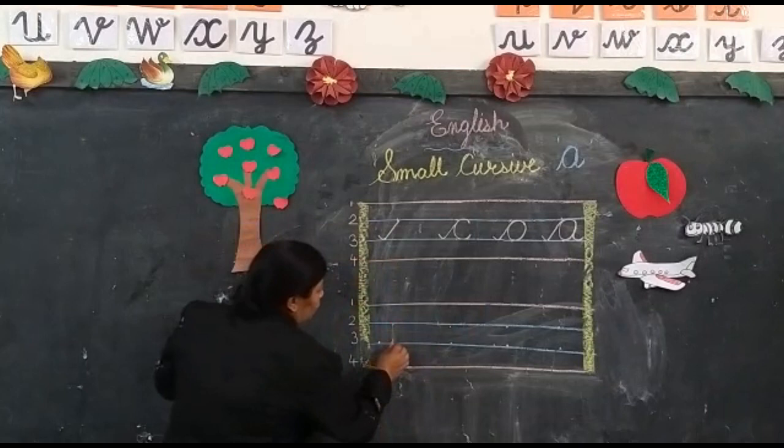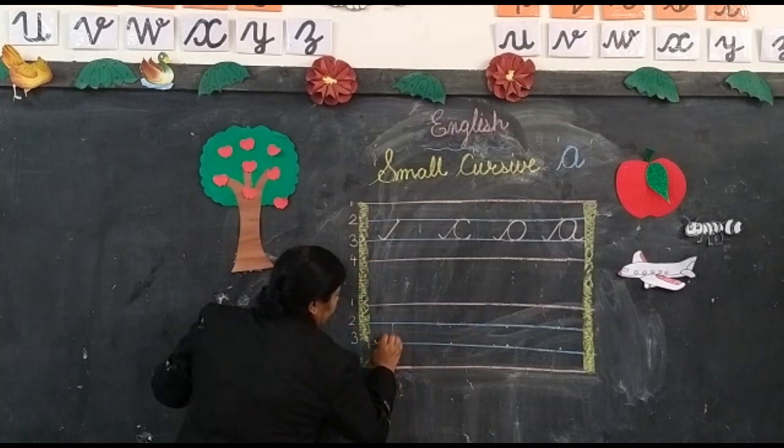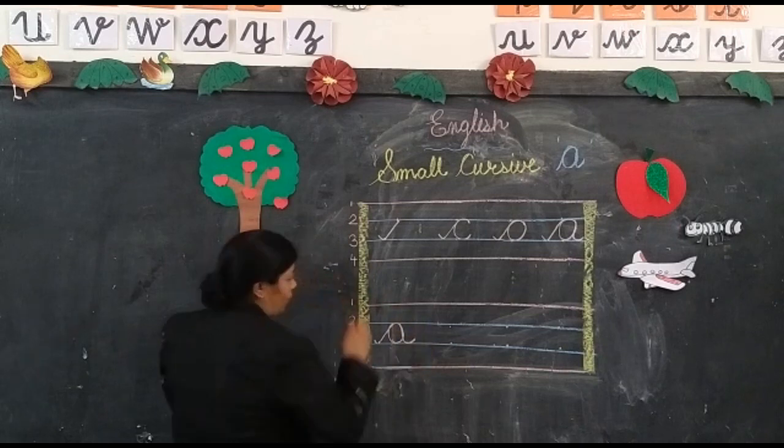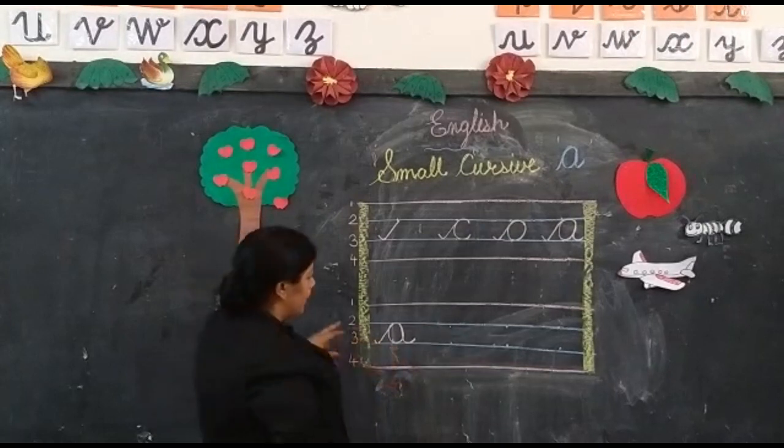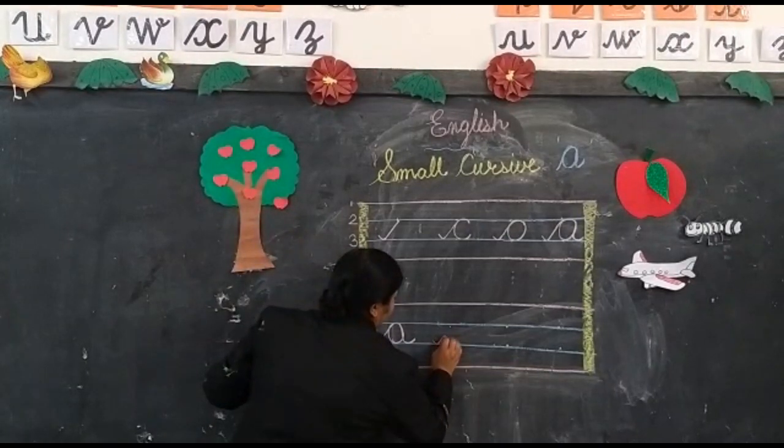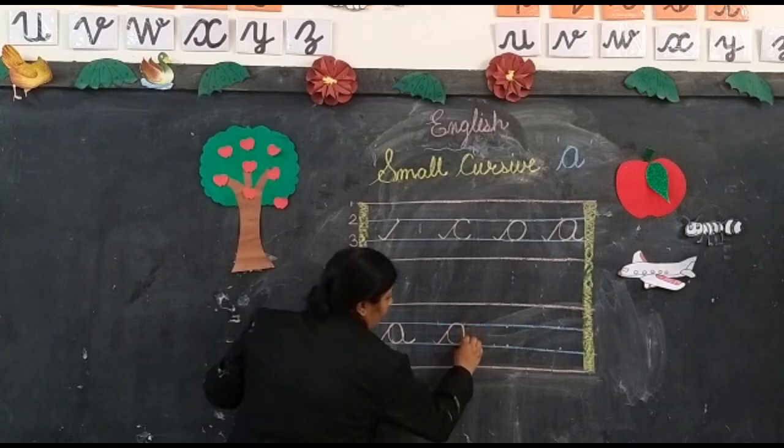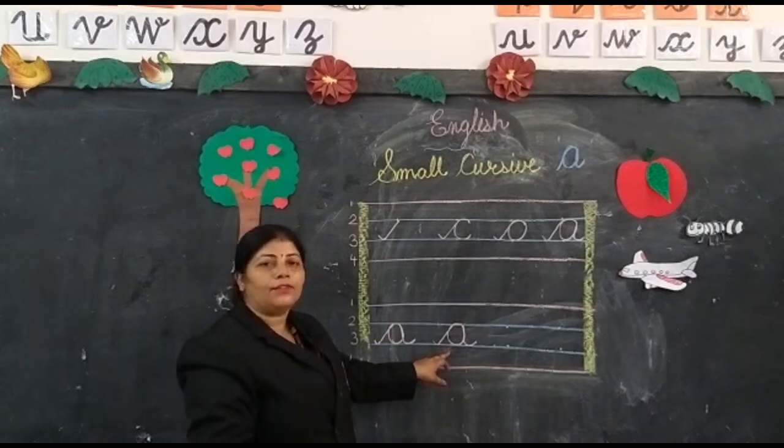Now you have to do this again and again. Make a curve, slanting line up, semicircle, circle, come down, make a curve and go forward. This is small cursive a.